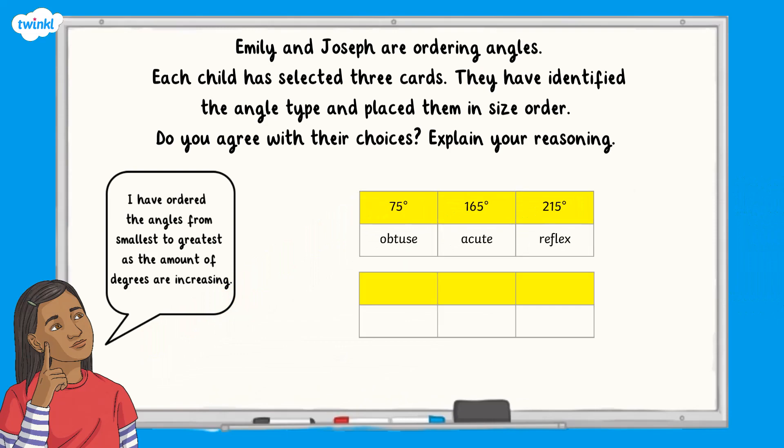Emily has correctly ordered the angles by amount of degrees, but has not identified all her angles correctly. 75 degrees is an acute angle, not an obtuse angle, because acute angles are less than 90 degrees. 165 degrees is an obtuse angle, not an acute angle, because obtuse angles are greater than 90 degrees, but less than 180 degrees. The reflex angle has been identified correctly.